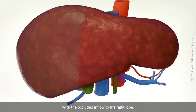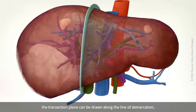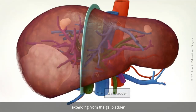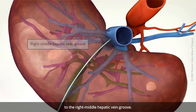With the occluded inflow to the right lobe, the transection plane can be drawn along the line of demarcation, extending from the gallbladder to the right middle hepatic vein groove.